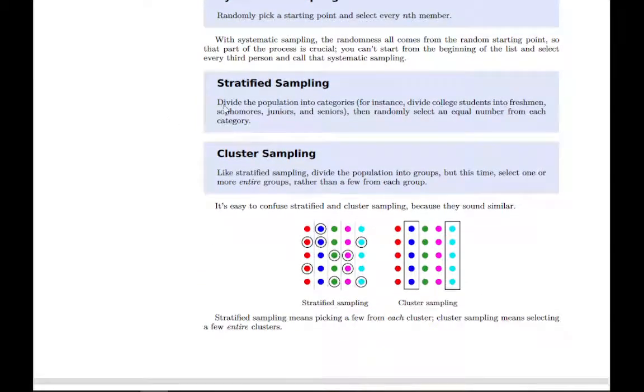The last two are very similar, and it's important to pay attention to these two because it's easy to confuse them. In both cases, you divide your population into categories. Say we could divide college students based on the year that they are: freshmen, sophomores, juniors, and seniors. With stratified sampling, you pick a few from each category. I've got a visual here where I've divided them into five categories based on their color. Stratified sampling says, let's pick a couple from each color. We'll make sure to pick two from each one. There's some randomness—we randomly select two out of each color, which gives us a total of ten in our sample.